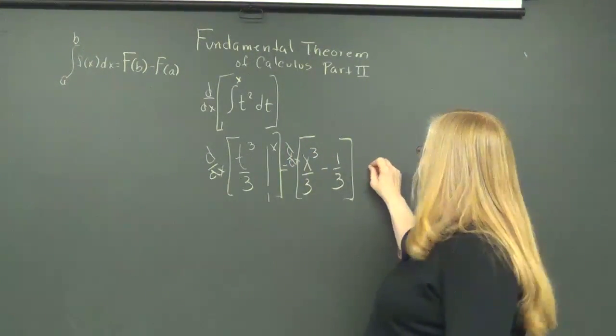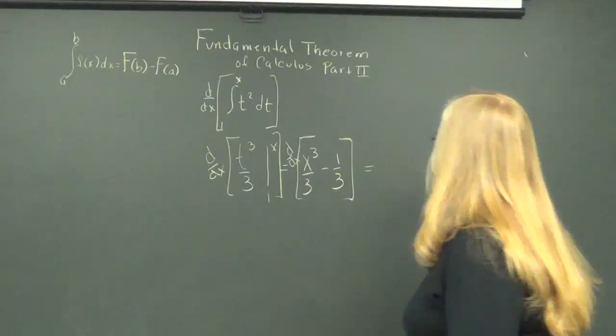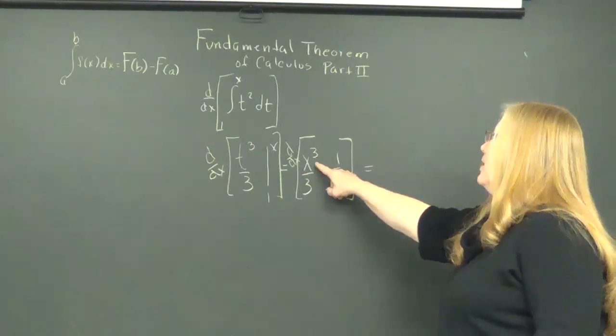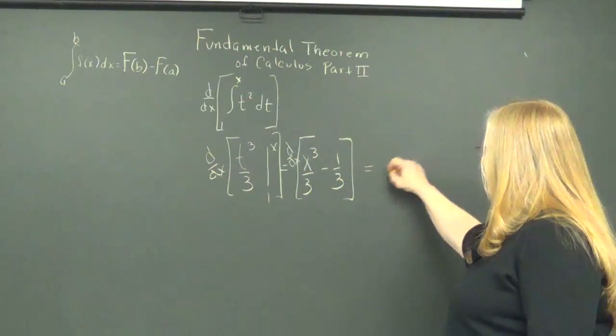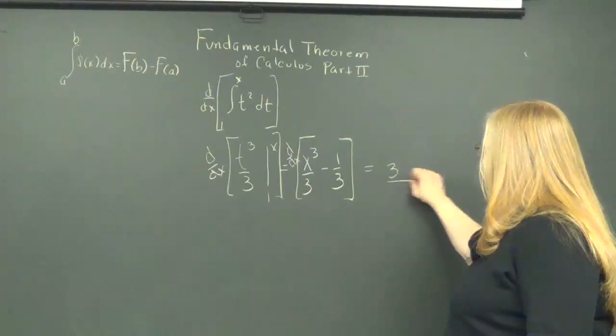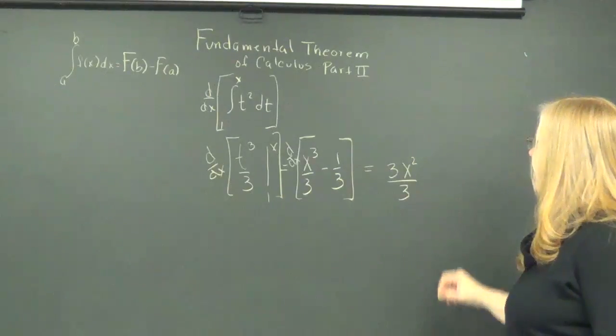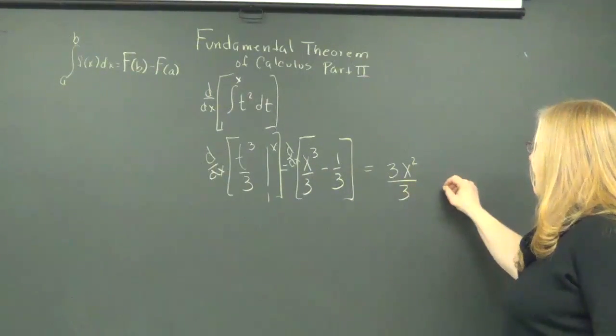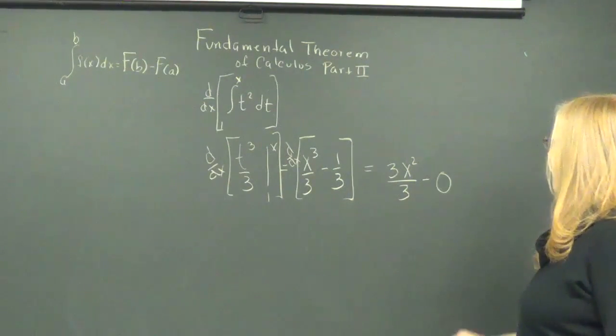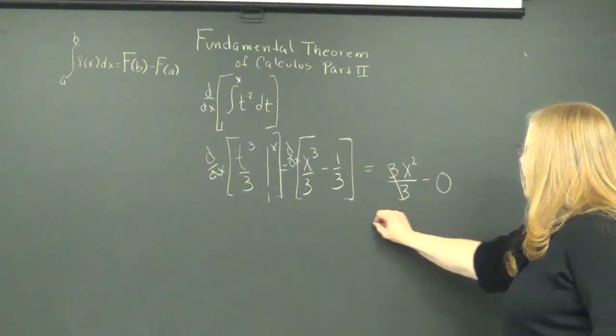So, what is the derivative of this expression? I'm going to let the 3 run down in front, and there's already a 3 in the denominator, and the x reduces by 1. The derivative of that is 0, so I end up with x squared.